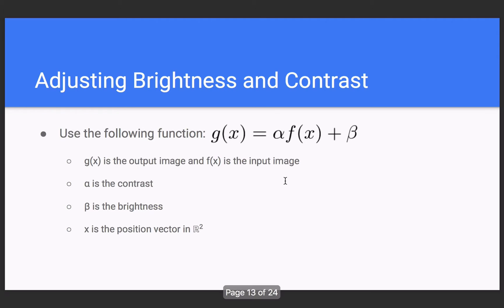So how do we apply these to images? Here's an example. What brightness and contrast really are, are these different constants in this function here. This alpha you see here is what the contrast actually is, and this beta you see here is actually the brightness. This f of x is supposed to represent the input image and this g of x is the output image.